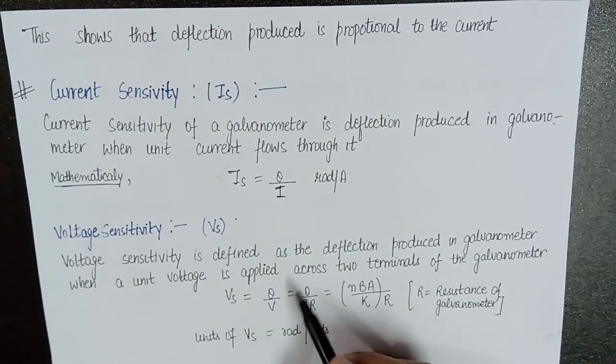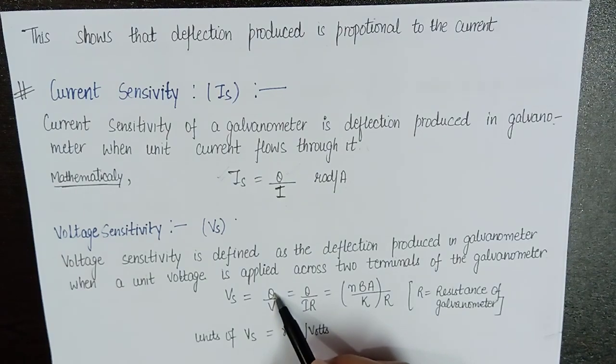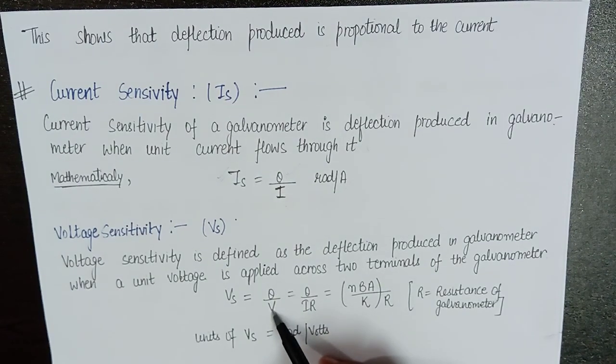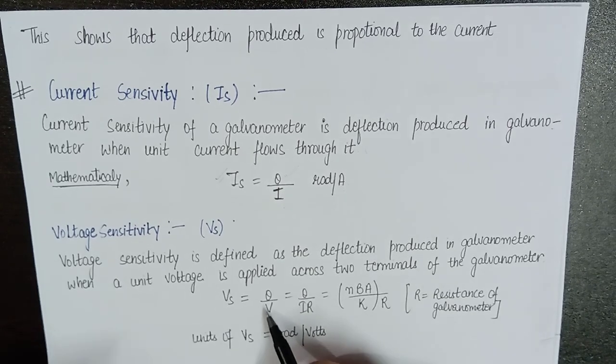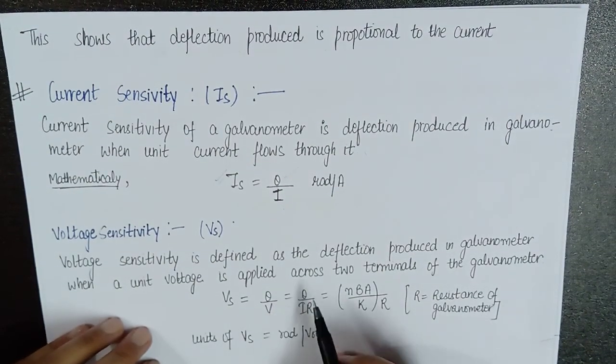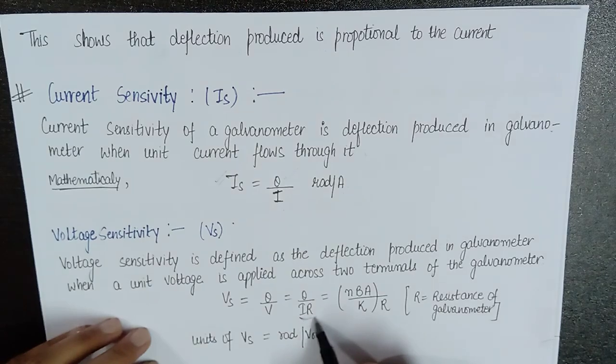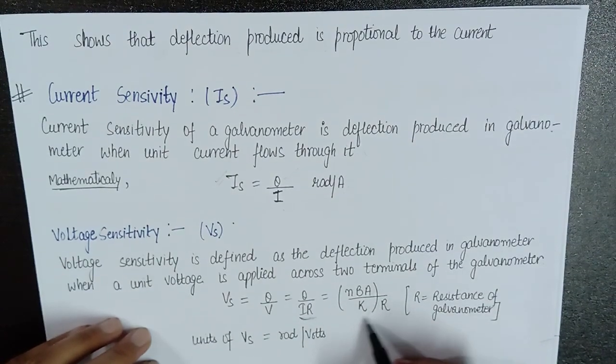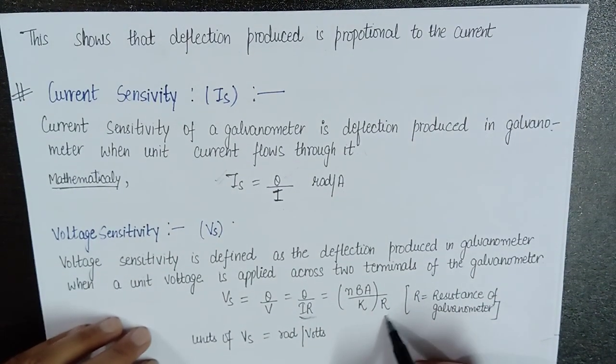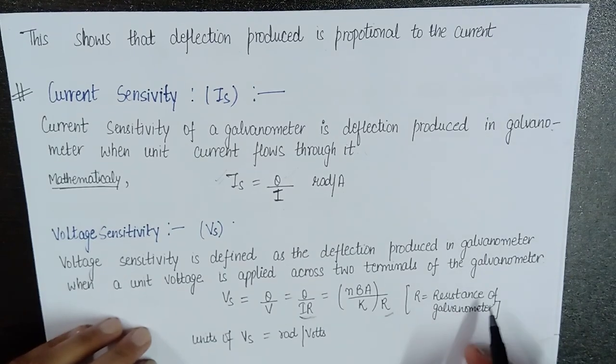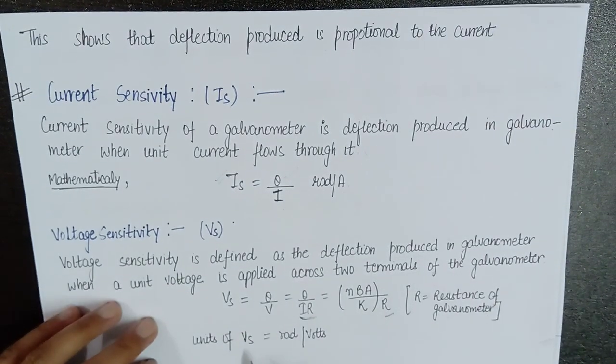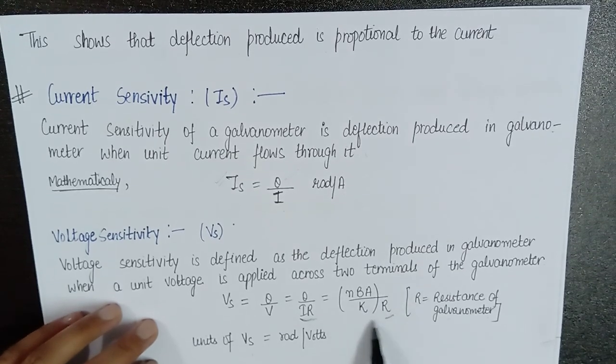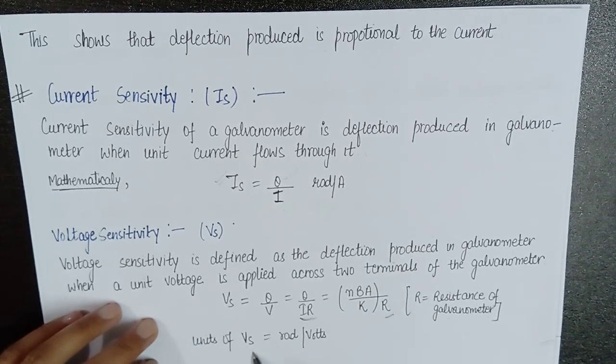So, what will be our notation? Theta is the deflection produced upon the potential difference between the two terminals V. Which V can be further written as IR with the help of Ohm's law. So, if we will further simplify, it comes out to be like this. So, this R is nothing but the resistance of galvanometer. And the Vs is the final expression. And the units will be radians per volt.